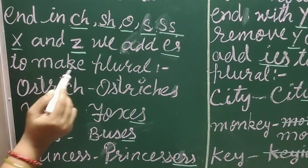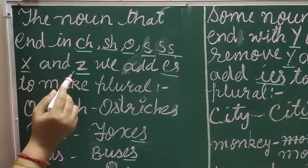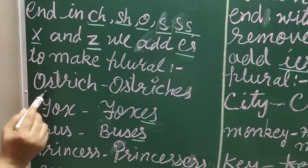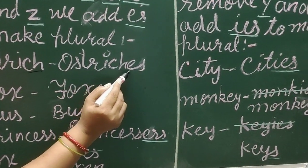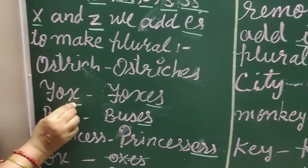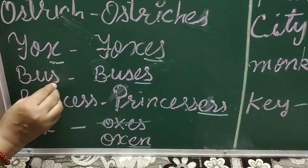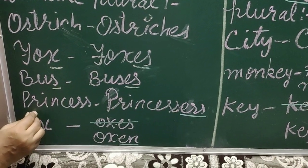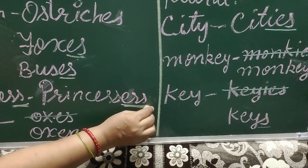The word which ends with CH, SH, OS, double-S, X, or Z — we add ES to make it plural. For example, ostrich ends with CH, so we add ES to make it plural. Fox ends with X, so we add ES to make it foxes. Bus ends with S, so we add ES. Princess ends with double-S, so we add ES to make it plural.